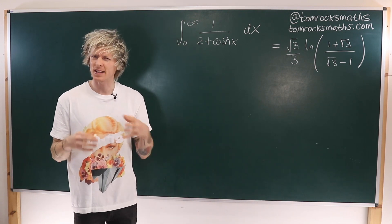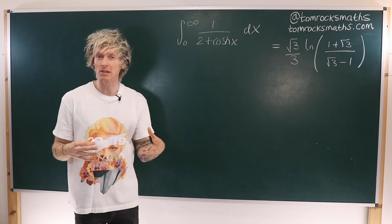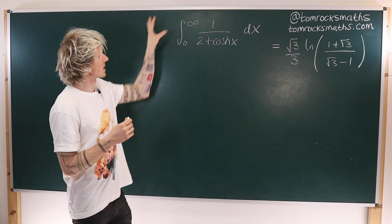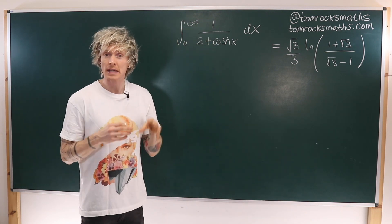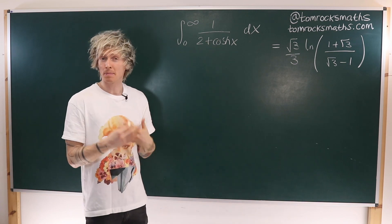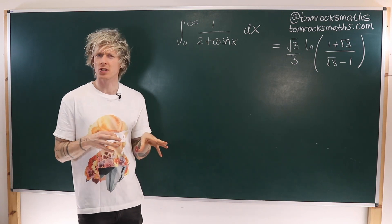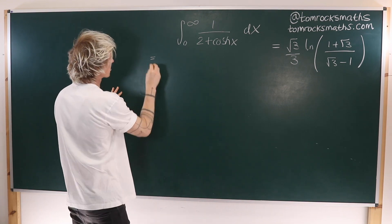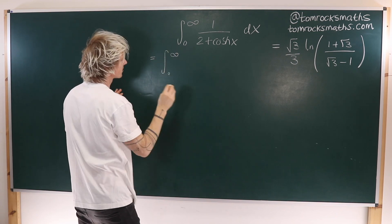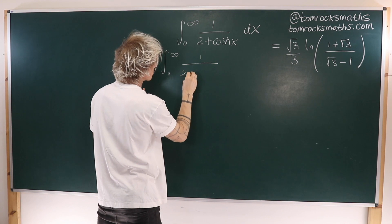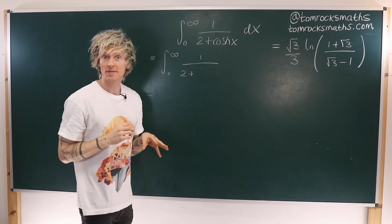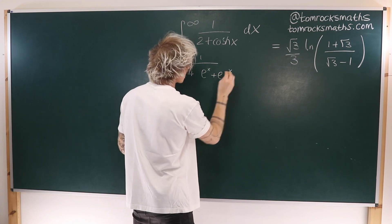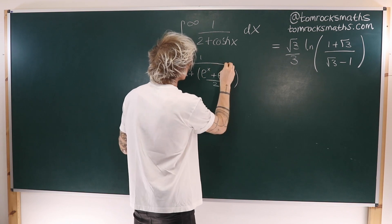Now we know what the answer should be, let's try to solve the integral for ourselves and hopefully end up with the same answer. My first thought is to replace the hyperbolic cosine, or the cosh function, with its definition in terms of exponentials. So cosh of x is equal to e to the x plus e to the minus x divided by 2.